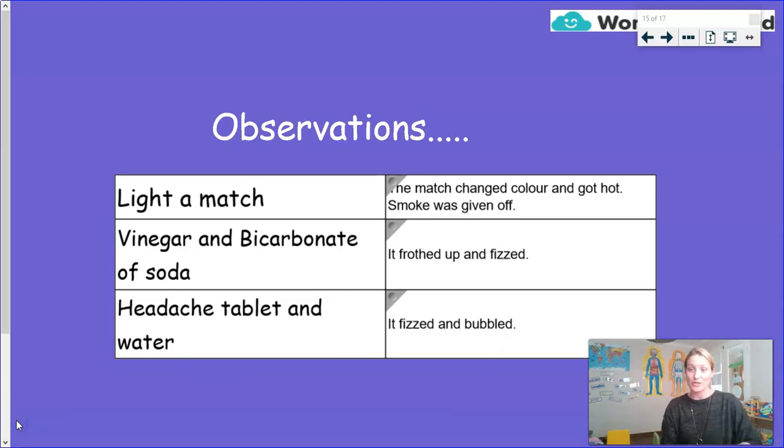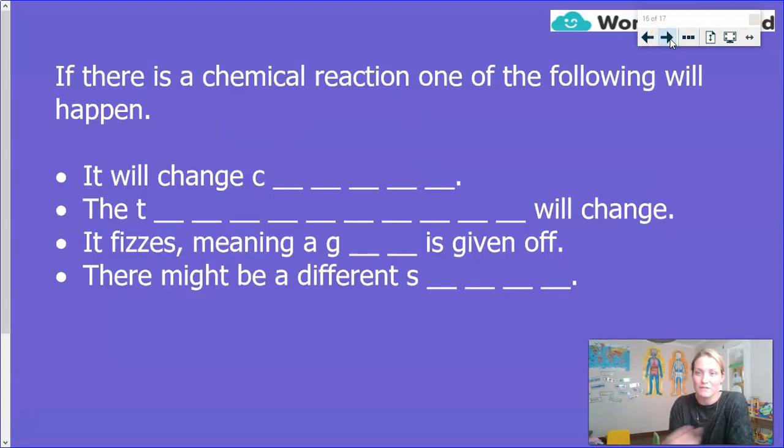Now, knowing that all three of those are examples of chemical reactions - remember, chemical reactions are irreversible changes - we can come up with a little list of things, a checklist of sorts to figure out if a reaction is reversible or irreversible. Let's see if you can answer the following questions for me. If there is a chemical reaction, one of the following things will happen. It will change what? The blank will change. It fizzes, meaning a blank is given off. Or, there might be a change in blank. So, what words can complete those sentences? Let's go back and have a think.